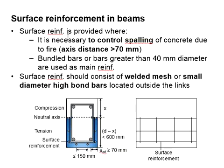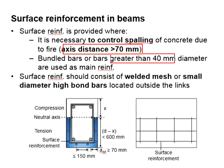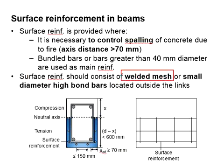As for the surface reinforcement, when your axis distance is more than 70 mm, or when your bar diameter is more than 40 mm, surface reinforcement is provided. Surface reinforcement is provided in the form of welded mesh or small diameter steel bars, which are located around the stirrups.